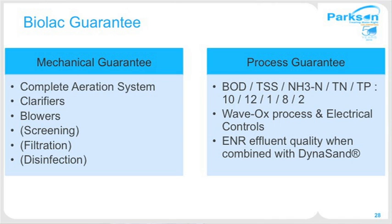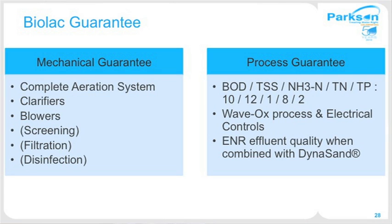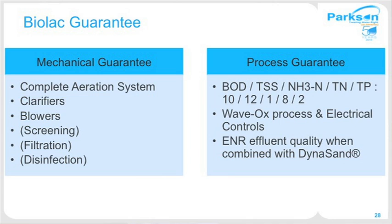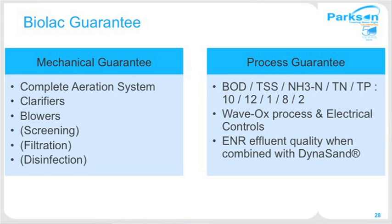Parkson provides a mechanical guarantee over the aeration system, clarifiers, blowers, and electrical controls, and can also provide screening for headworks, filtration, and disinfection. Parkson also provides a process guarantee for effluent quality: BOD and total suspended solids less than 10, ammonia less than 1, total nitrogen of 8 in a typical municipal application, and total phosphorus of 2 with Wave Ox controls. For enhanced nutrient removal applications such as the Chesapeake Bay — requiring total nitrogen less than 3 and phosphorus less than 0.3 — Parkson can offer Dyna Sand filters combined with BioLac to meet the lowest ENR permit limits in the U.S.